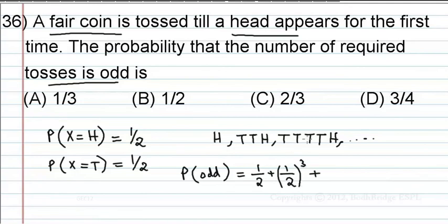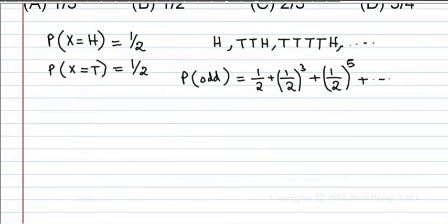Plus here, four tails and a head: (1/2)⁴ times 1/2, which is (1/2)⁵. Plus so on. Next we get (1/2)⁷.